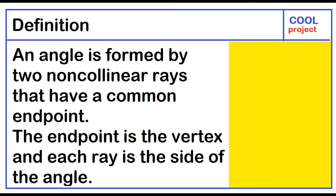An angle is formed by two non-collinear rays that have a common endpoint. The endpoint is the vertex, and each ray is the side of the angle.